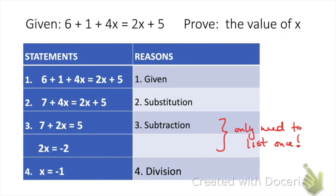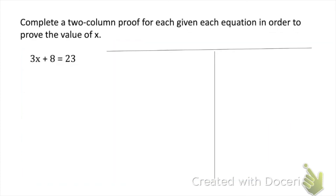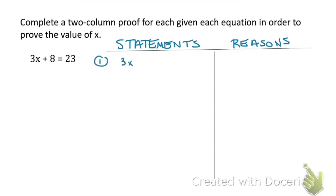Let's put this all together by trying our first proof together. It says: complete a two-column proof for each of the given equations in order to prove the value of x. I'm going to write 'Statements' and 'Reasons' as my headings to keep things organized. For my first line, I'll write the equation we're given: 3x plus 8 equals 23. That first reason is always going to be 'given.'